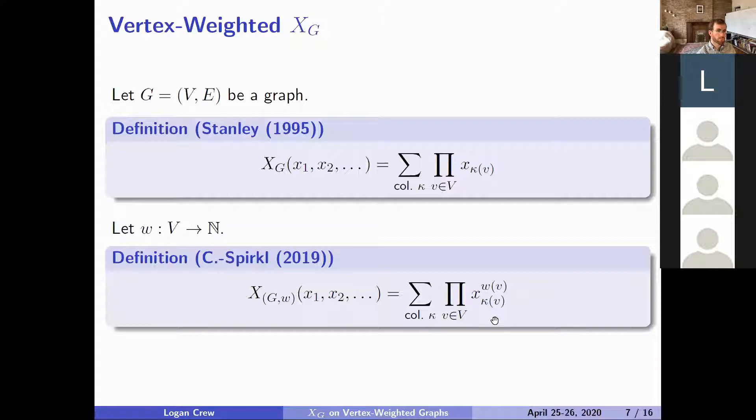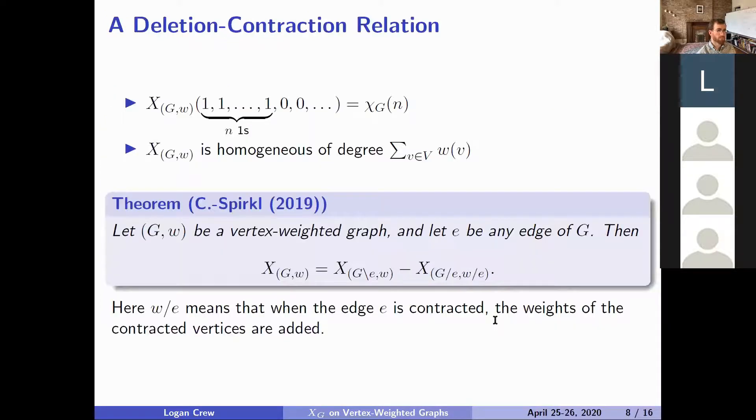This will mean that the total weight of the monomials produced is going to be the sum of the vertex weights of the graph. And that is something that we can make be a fixed value much more easily.